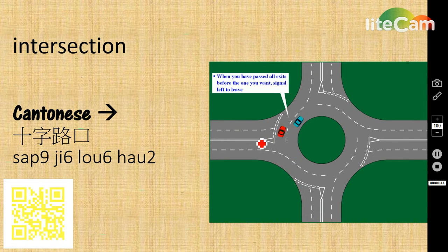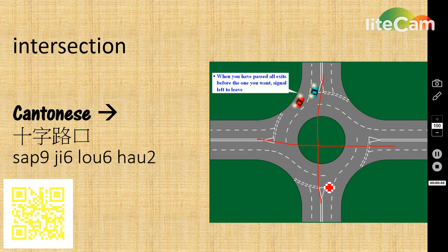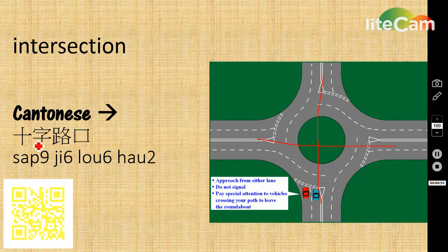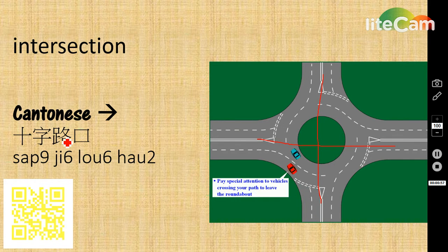And here, this character is similar to the word 天 in Cantonese. So we will call this intersection 十字路口.